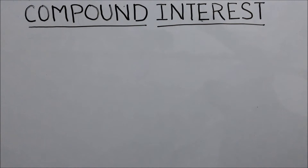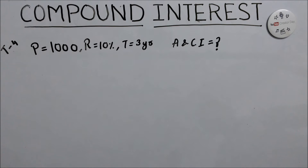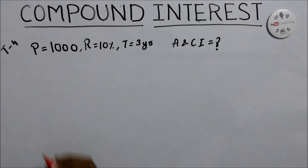Hello friends, this is our second video on compound interest tricks. Hope you saw our first video. Now we discuss four new tricks. This is trick number four. The question is: principal equals 1000 rupees, rate of interest equals 10%, time equals 3 years, and we need to calculate amount and compound interest.